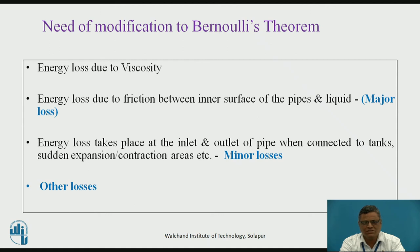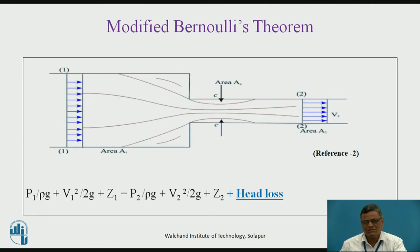The losses are of two types: major loss and minor loss. The major loss refers to the loss due to friction between the inner surface of the pipe and the flowing liquid — this value is larger, hence it is called a major loss. The minor loss occurs due to reasons such as the pipe connecting to a tank, sudden expansion, or sudden contraction. In this case, sudden contraction has occurred causing energy loss. Other minor losses also arise due to fittings and valves. These losses in real-world situations need to be considered, and the equation needs to be modified.